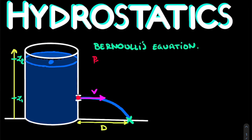We can write down Bernoulli's equation. For the first point at the hole, we have the atmospheric pressure p_atm — the background pressure — plus the potential energy term: density rho times gravitational constant g times the height z1. Then we add the kinetic term: one-half times rho times velocity squared. That completes the expression for our first point.